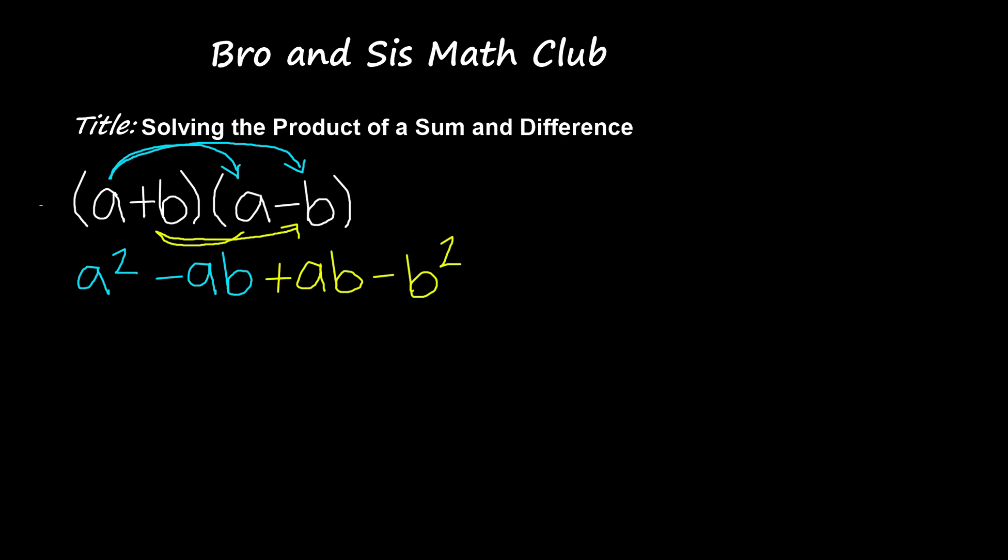So when we have a squared, we're going to bring that down as it is. And then we see that we have negative ab and positive ab. Now when we have a number, and then we're adding that number to itself, but one is positive and one is negative, what happens is that those two numbers cancel each other out. So same thing happens here. We have ab, but we have one negative ab and we have the other one as a positive ab, so they're gonna cancel each other out.